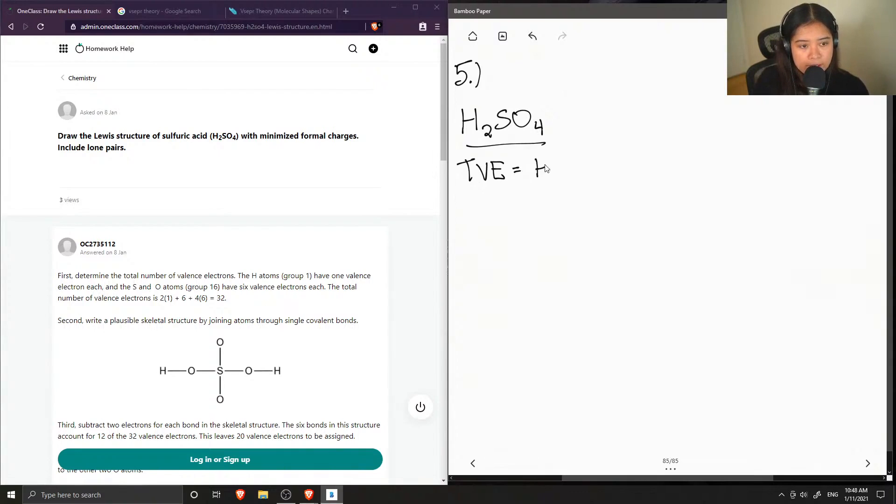So for hydrogen, a hydrogen atom has one valence electron and since we have two of them we multiply this by two. So sulfur contains six valence electrons and oxygen also contains six, but we have four oxygen atoms so we multiply this by four. And now if we add this all up we get a total of 32 valence electrons.